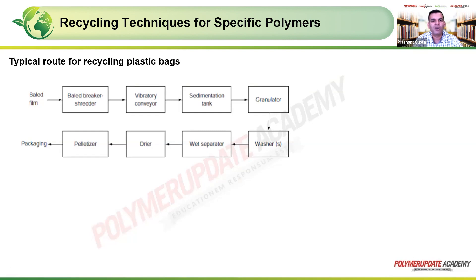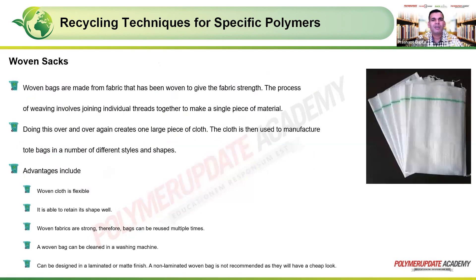After sedimentation, there is size reduction in a granulator. The material goes into a washer for cleaning, then passes into a wet separator such as a trommel or rotary screen, then into a dryer using thermal or air drying methods, and finally into a pelletizer or extruder where it is pelletized and processed for packaging.